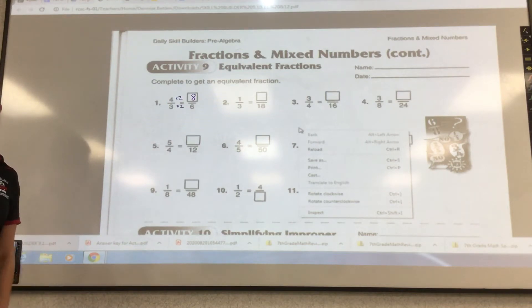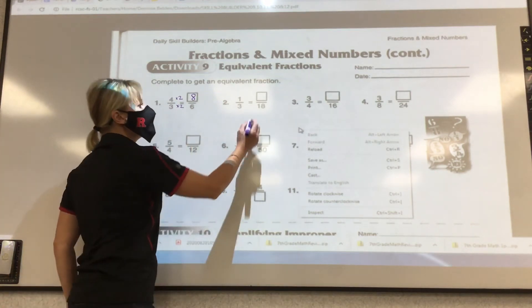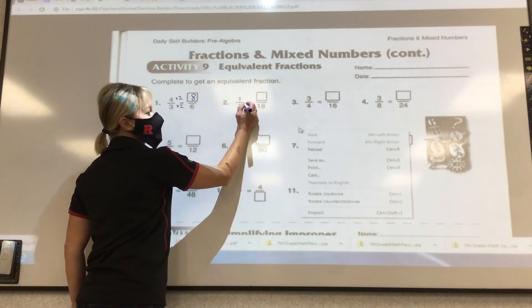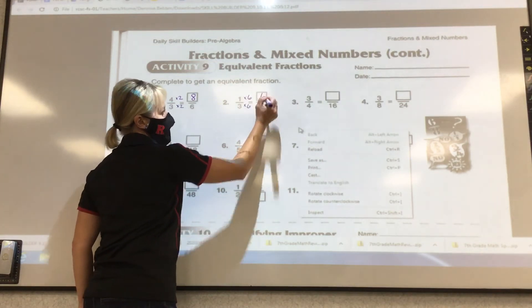I know many of you can do it in your head, and that's okay, but I want to see the work. So then how do I get from 3 to 18? Times what? Times 6, and then you can do the numerator times 6, so it's 6/18.